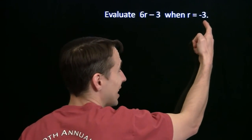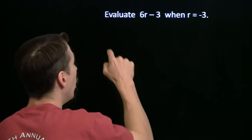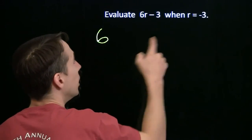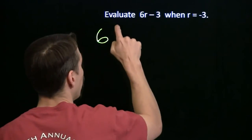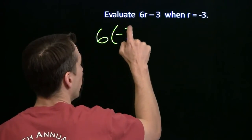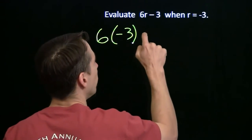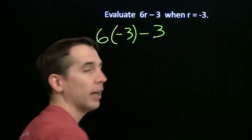The first step is to take that value and put it in for the variable. All we're doing here is substituting. We've got a negative value, so I use parentheses here. Parentheses are your friend, especially when you're dealing with negative values.